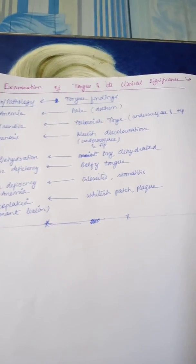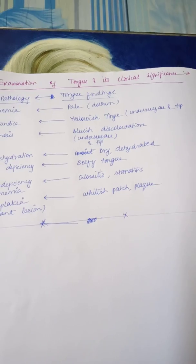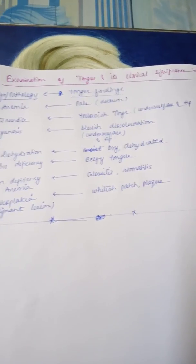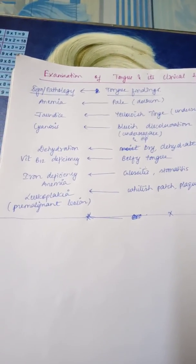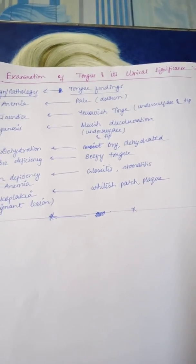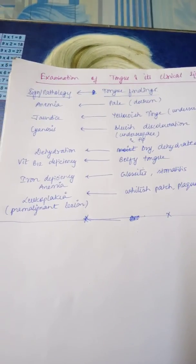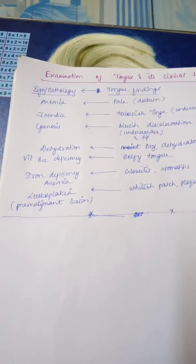If the tongue is dry, dehydrated, with cracks and fissures, then that is because of dehydration. If it is a beefy red tongue, then that is found in vitamin B12 deficiency anemia.